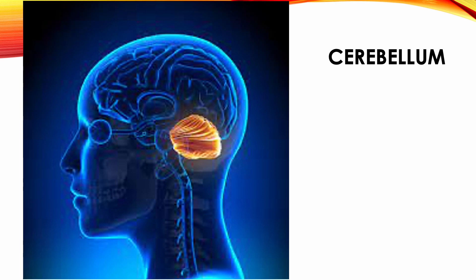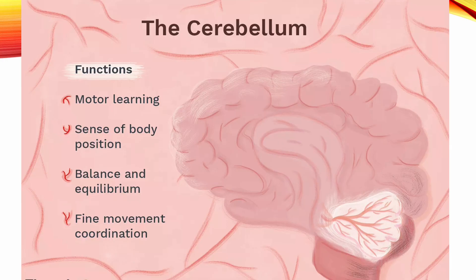Cerebellum. The cerebellum is located immediately below the posterior portions of the cerebral hemispheres. It lies in the posterior cranial fossa. No cranial nerve directly attaches to the cerebellum. The functions of the cerebellum include maintaining balance and controlling the contraction of voluntary muscles, especially the timing and strength of contractions of various muscles for smooth movement. Damage to the cerebellum will result in disturbances of voluntary movement.